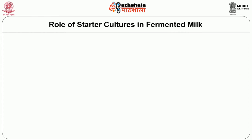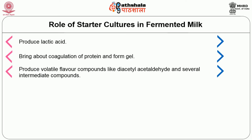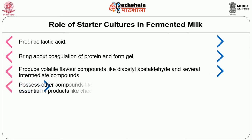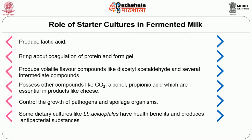Let us highlight the role of starter culture in fermented milk. When starter culture grows in milk, it affects the constituents of milk and brings fermentative metabolic changes. It produces different intermediary or end products which give typical characteristics to fermented milk: it produces lactic acid; it brings about coagulation of protein and forms gel; it produces volatile flavor compounds like diacetyl, acetaldehyde and several intermediate compounds; it produces other compounds like carbon dioxide, alcohol and propionic acid, which are essential in products like cheese; it controls the growth of pathogens and spoilage organisms; and some dietary cultures like Lactobacillus acidophilus have health benefits and produce antibacterial substances. It also helps in the texturing and ripening of milk.